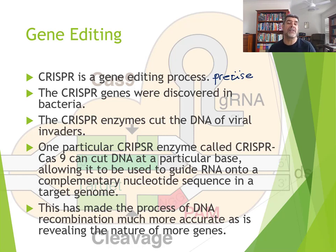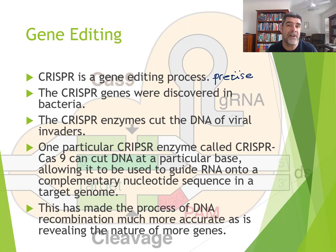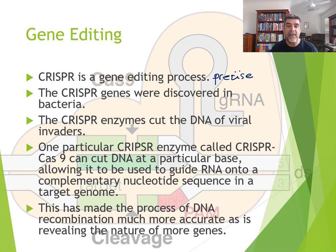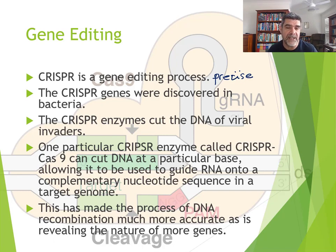The CRISPR genes were discovered in bacteria. You'd be aware of the fact that viruses actually get in and inject their genetic material into the host's DNA. And therefore, when the host is replicating its DNA, it's also making copies of the viral DNA.